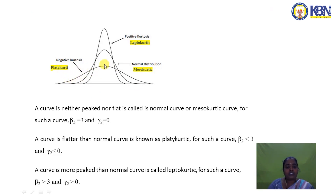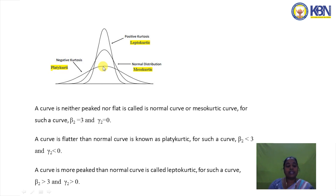If the curve is normal, it is called mesokurtic, with β2 = 3 and γ2 = 0. If the curve is flatter than normal, it is called platykurtic, with β2 < 3 and γ2 < 0. If the curve is more peaked than normal, it is called leptokurtic, with β2 > 3 and γ2 > 0.